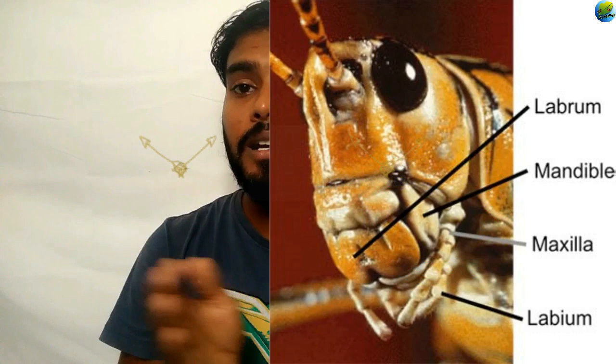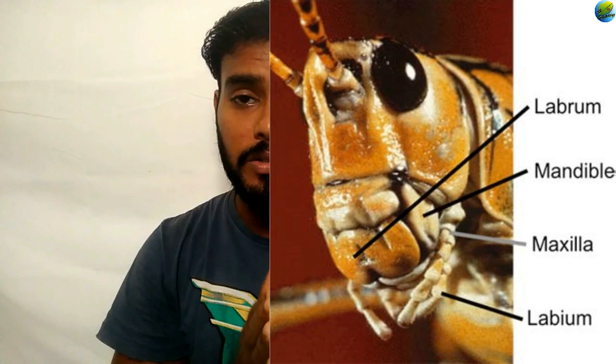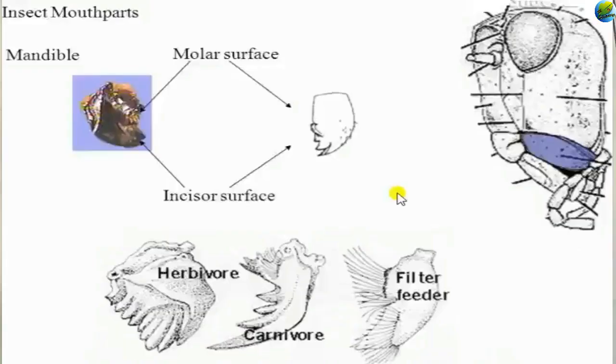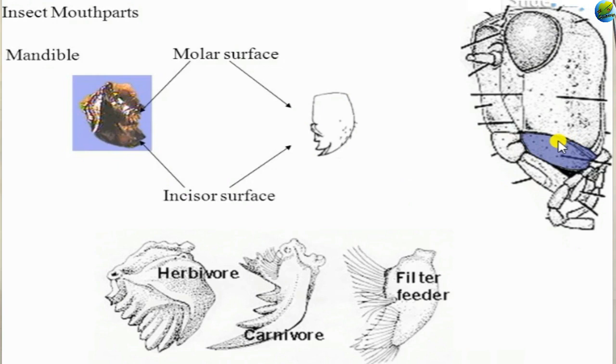The next mouth part is the mandible, otherwise known as the primary jaws — the primary cutting teeth of the insect. A pair of mandibles is present on the right and left sides. They are mostly unsegmented and highly sclerotized to cut the toughest food. The mandibles are attached on the sides of the mouth and move sideways. There are two types of teeth in the mandible: incisor teeth in the terminal region for cutting, and molar or grinding teeth in the basal region.